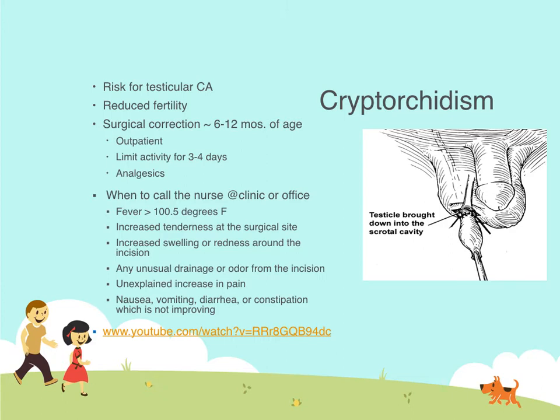For that reason, when a child is admitted with testicular cancer, we ask in the history whether the child had undescended testicles at birth. We don't correct cryptorchidism until about 6 to 12 months of age, allowing time for them to come down naturally. If it's fully in the abdomen it's a different management — for children like those in the pictures, we give tincture of time. This is now an outpatient procedure, and if you're interested there's a YouTube video you can search. We limit activity for about three to four days.